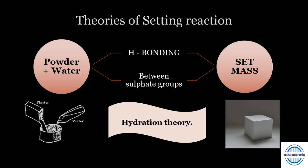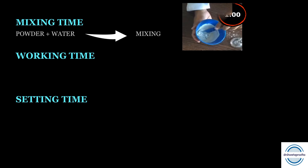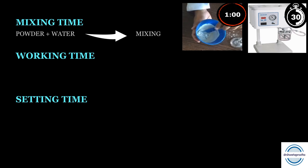Before we move to manipulation, three times are important. First is mixing time: the time from addition of powder to water until mixing is completed. With hand spatulation it takes one minute; with a mechanical mixer it takes 20–30 seconds. Second is working time: the time available to use the workable mix, from the start of mixing to the point where the consistency is no longer suitable for use — generally three minutes.